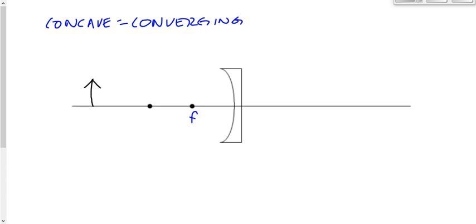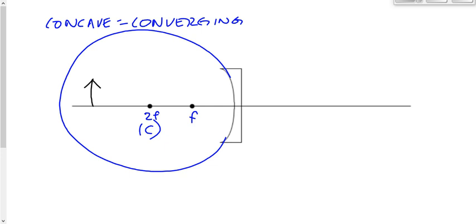We're going to define this as F, the focal point, and this as 2F. In addition to being twice the focal length, 2F is also the center of curvature — the center of the circle if you drew a complete circle. Sometimes you may be given the radius of the mirror. The radius is the distance from the mirror to the center of the circle, so the focal length would be half that. If you're given the radius, you effectively have the focal length — just divide by two.